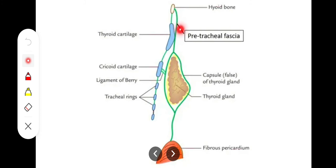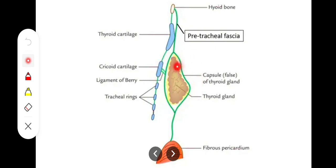Since the pre-tracheal fascia is enclosing the thyroid gland, it forms a false capsule of the thyroid gland. The thyroid gland itself has a true capsule which is connective tissue, but the enclosing layer of the pre-tracheal fascia forms the false capsule of the thyroid gland.